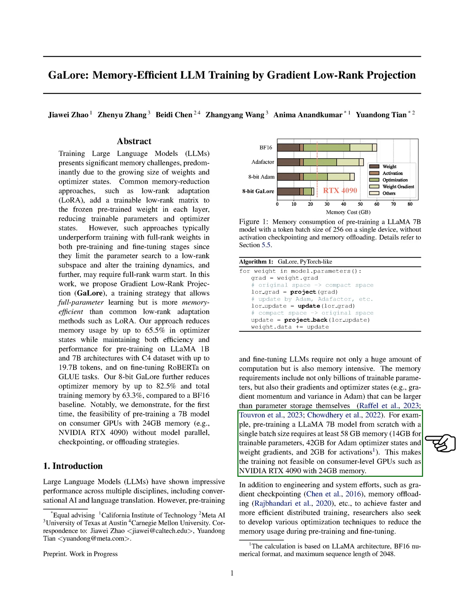For instance, training a LLaMA 7B model from scratch with a single batch size needs at least 58GB of memory. This includes 14GB for trainable parameters, 42GB for Adam optimizer states and weight gradients, and 2GB for activations. This makes it challenging to train on GPUs like NVIDIA RTX 4090 with 24GB memory.